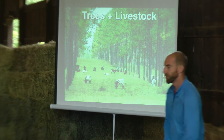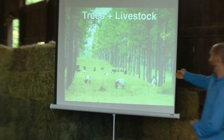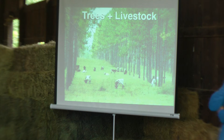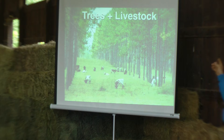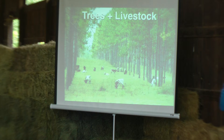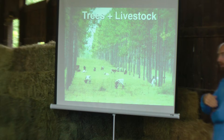Silvopasture — this is the most simplistic definition you can see. This is in Georgia: loblolly pine, grass, and cattle. Trees and pasture — that's the definition of silvopasture. But silvopasture can be a lot more than that, and that's what we're trying to implement.